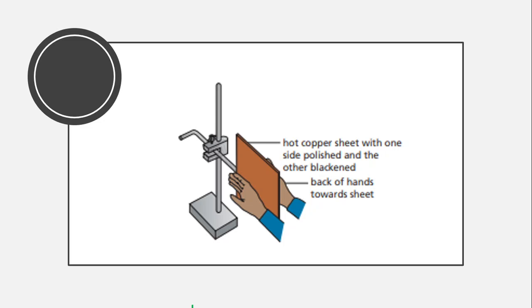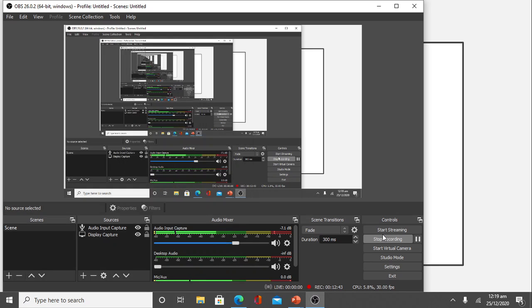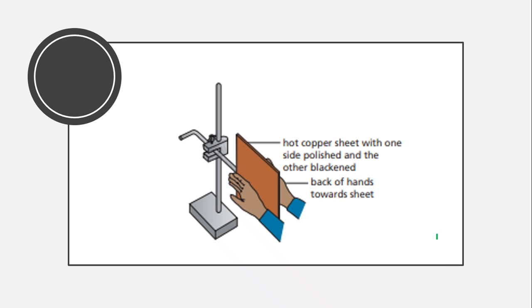Another experiment demonstrates emission. A hot copper sheet has one side polished and the other blackened, and both are heated to the same temperature. When you hold your hand at some distance behind each side, the hand behind the blackened side feels warmer. This confirms that blackened, dark matte surfaces are better emitters of radiation than shiny polished ones.